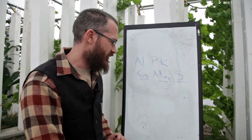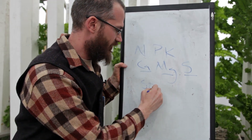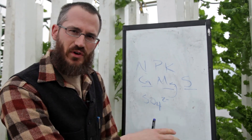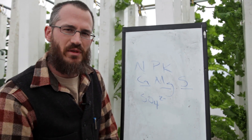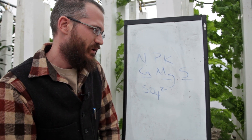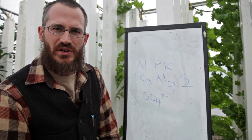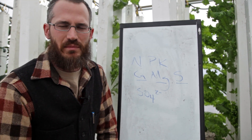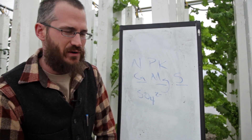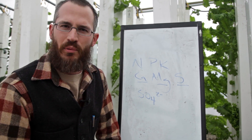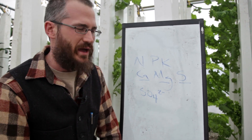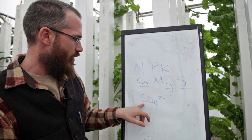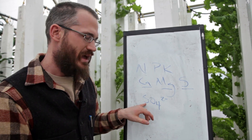Sulfur is present in our system in the form of sulfate, or SO4. Sulfate is just floating around our system and the plants are taking it up, reducing it, and using it for things — mostly things like building amino acids and other chemicals that are very important to the plant. So this is how sulfur occurs in the system.